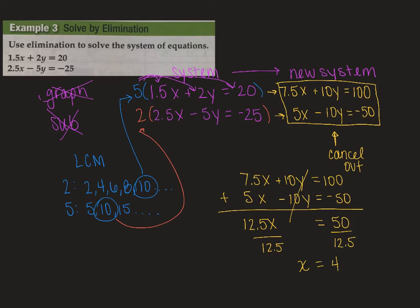Now you can go back to any equation that you're using. You can use one of the originals. You can use one from your new system. It doesn't matter. You will get the same answer no matter what. So we need to do our step 3 to finalize our answer here. I'm just going to use the first one because it's the first one I solved. So I have 1.5x plus 2y equals 20. Now we know x equals 4. So we're going to do 1.5. We're going to replace x with 4. Plus 2y equals 20.